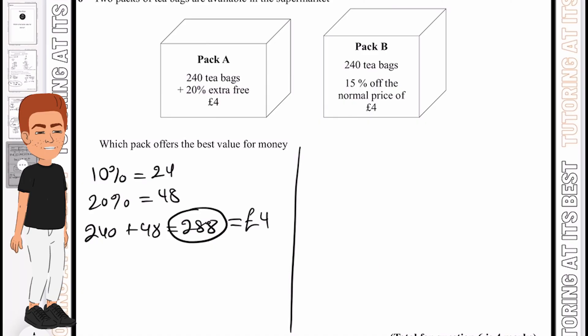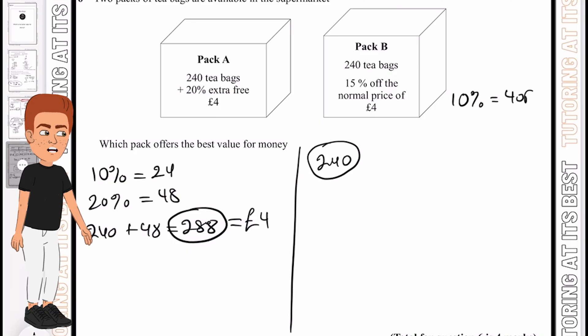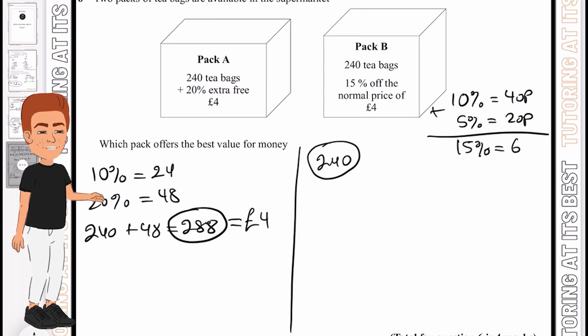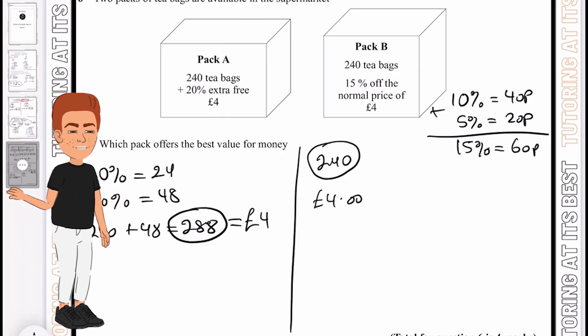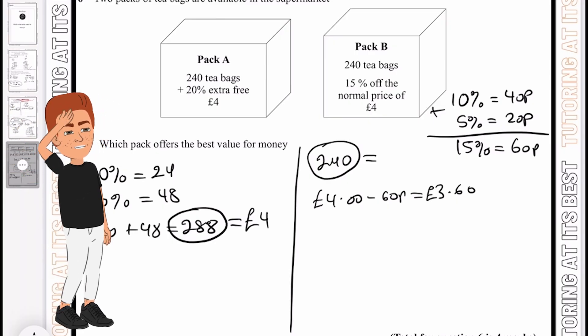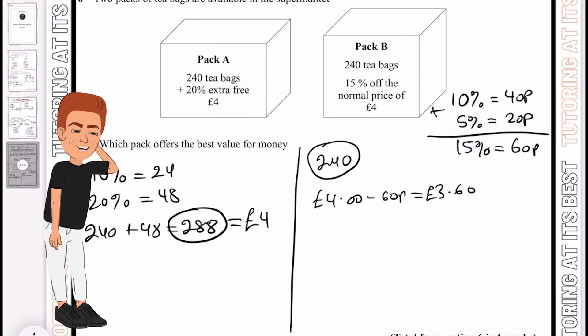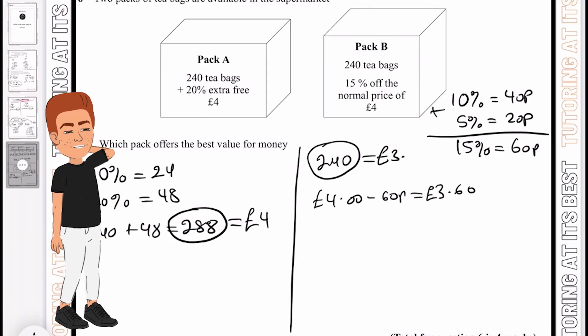For pack B we have 240 tea bags and 15% off the normal price of four pounds. Let's work out 10% of four pounds which is 40 pence, 5% which is 20 pence, and if we add that together we have 15% which is 60 pence. If we take four pounds and take away 60 pence, we're left with three pounds 40. So 240 tea bags will cost three pound 40.